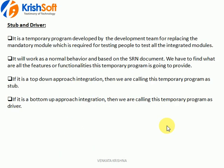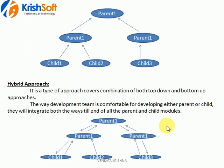In some interviews, they may ask you about stub and driver. For example, in the hybrid approach, assume the child module is developed and the main parent is developed, but the sub-parent in the middle is not developed. Then they give it to the testing team to test the child and main parent. But with the middle sub-parent missing, is it possible to test without integrating end to end? In this case, stub and driver come into the picture. Yes, even without the middle module, we can test it.